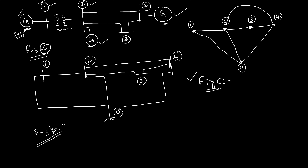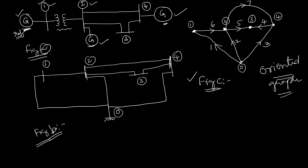If this graph is specified with directions, let us count the elements: one, two, three, four, five, six, and seven — so all seven line segments are given with direction. Now the graph is called an oriented graph. There is a difference between graph and oriented graph. In a normal graph, you won't have any directions, but in an oriented graph, you will be having directions.